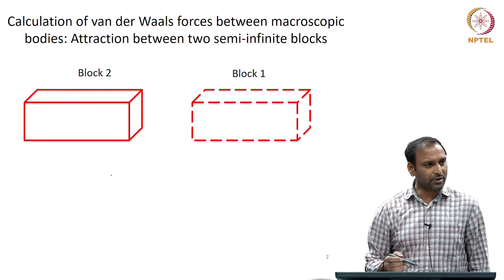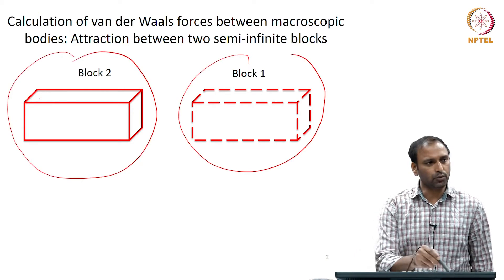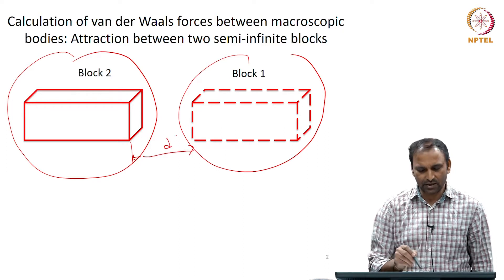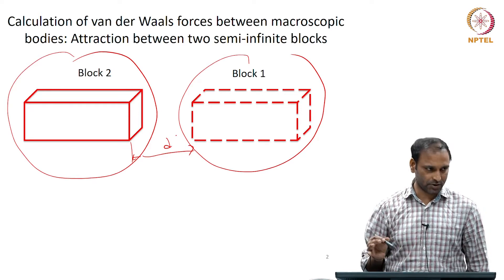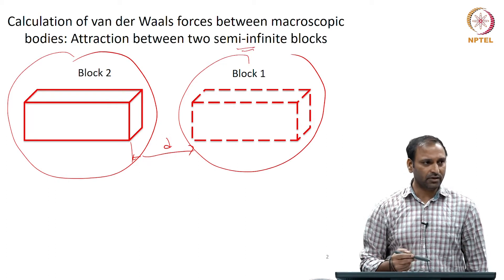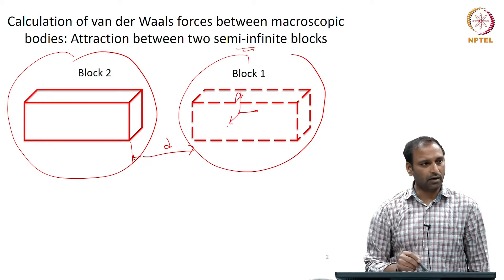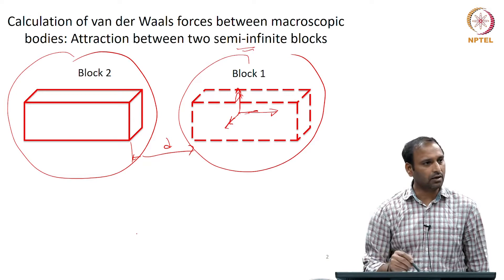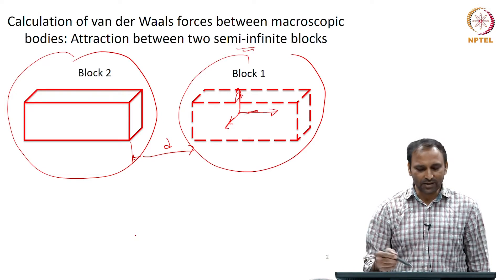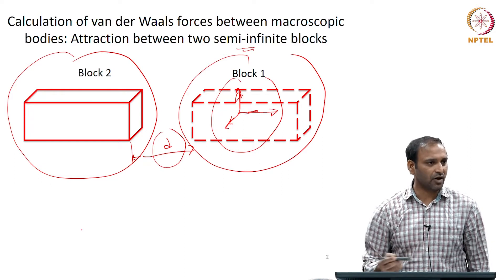What we are going to do is a simple derivation in which you have block 1 and block 2 separated by distance d, where d is the surface-to-surface separation distance. The reason they are called semi-infinite is that the length in one direction is finite, and the lengths in the other two directions are infinite — meaning those dimensions are much much larger compared to the separation distance.